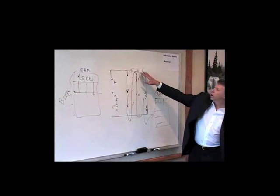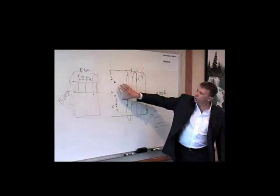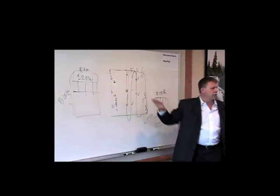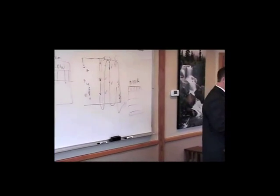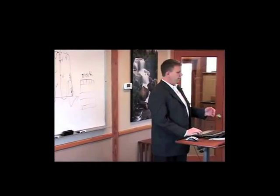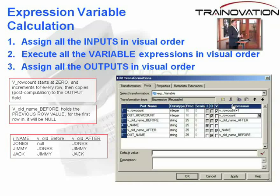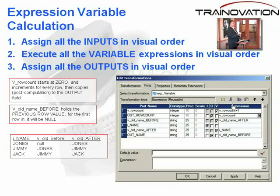So the visual order of the variable fields in the expression editor is what counts, and this is what we see here. V row count starts at zero — we're going to show you how to build a sequence-generated row count in another lesson. V row count is initialized to zero upon startup of the mapping.